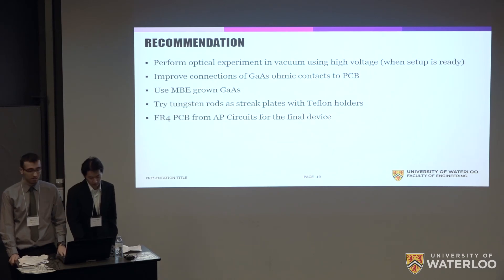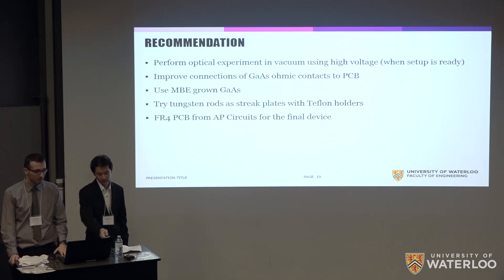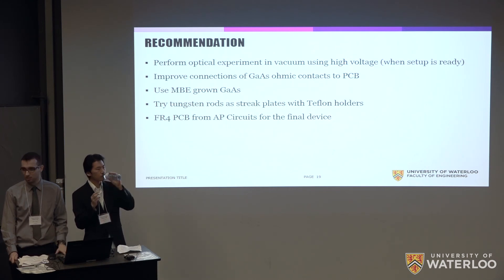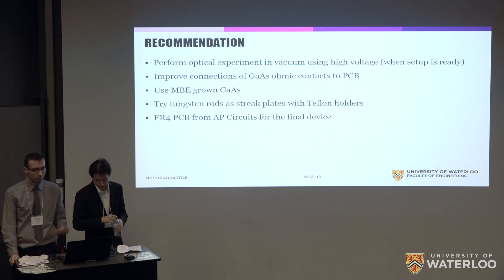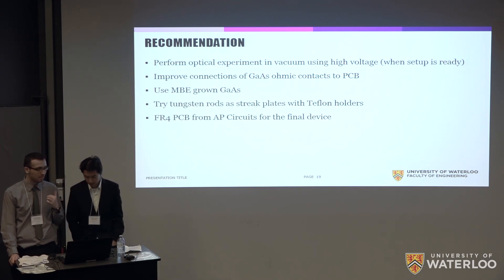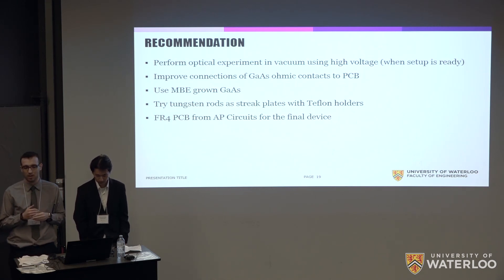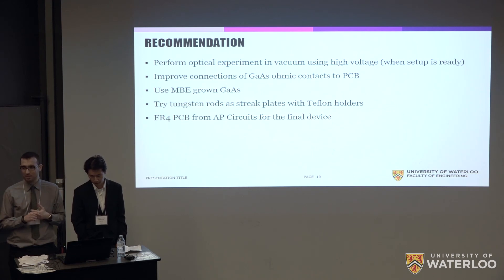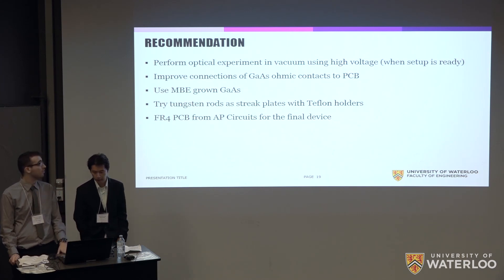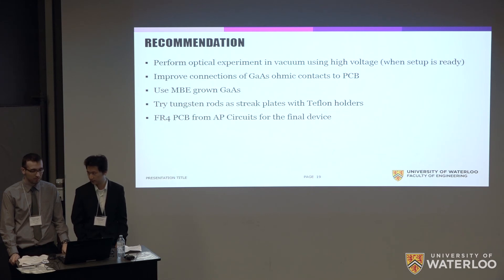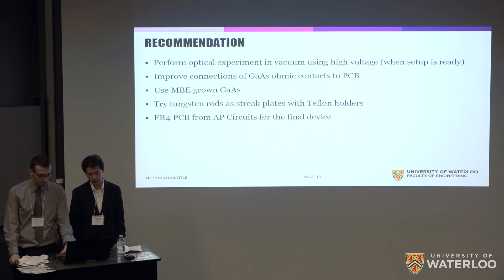For future steps and recommendations: first, we must perform the optical experiment in a vacuum to conclusively confirm that our device operates at the 5 gigahertz frequency we expected. Next, we recommend improving the connections with the gallium arsenide ohmic contacts — soldering is not a good enough contact for the photoswitch, so we recommend trying wire bonding and metallic contacts. Another recommendation is to potentially try using MBE-grown gallium arsenide wafers as opposed to the current design. And for the capacitor plates, we want to see if tungsten will have any different effect compared to titanium.